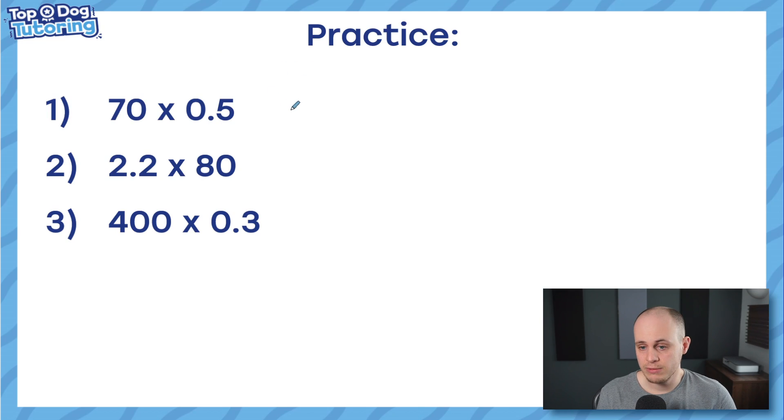Right, we're back. I'm going to turn these questions into something much nicer. I'm going to turn this one into 7 by dividing it by 10, but I'm going to turn this factor into 5 by timesing it by 10, so that means 70 times 0.5 is the same as 7 times 5. My answer is 35.